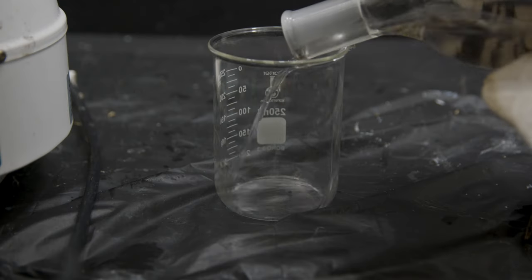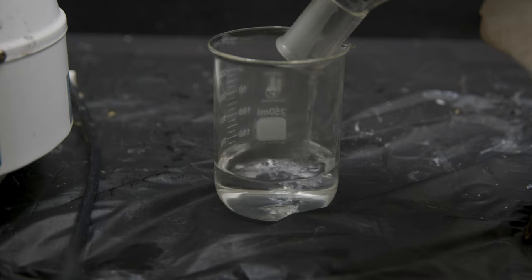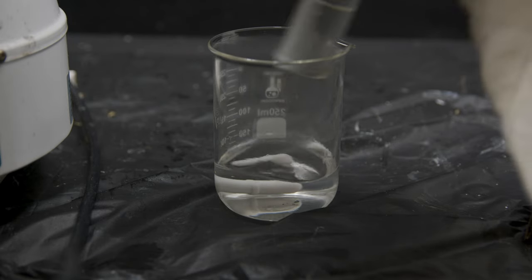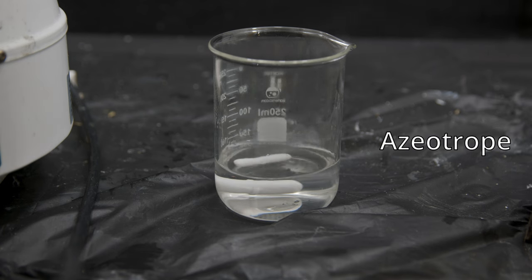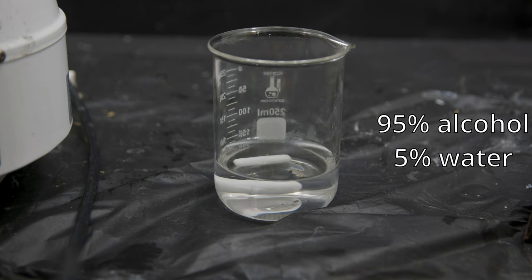Now you may be wondering why did I stop at 95% alcohol and not just do the full 100%? Well that's because water and alcohol form something called an azeotrope, which basically means you can only get it up to a certain percentage, in this case 95, and you can't distill it any further than that.